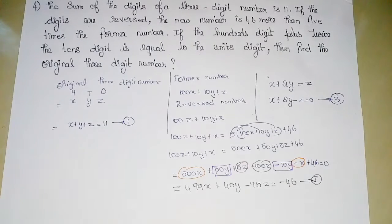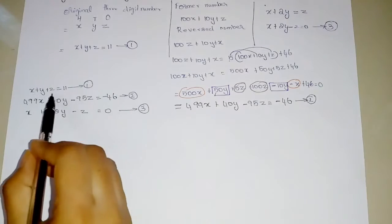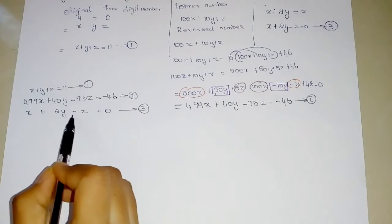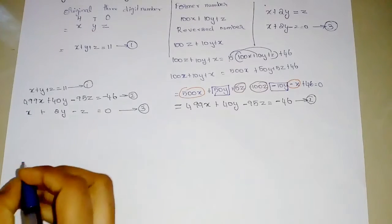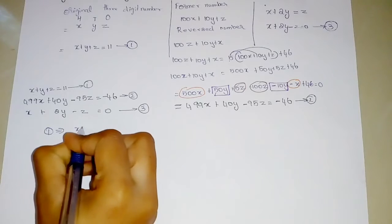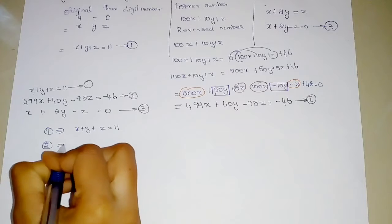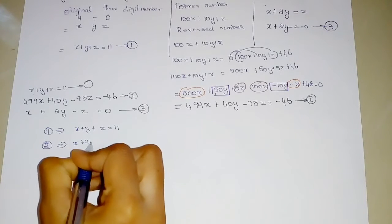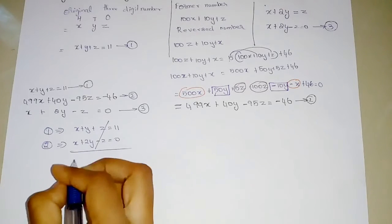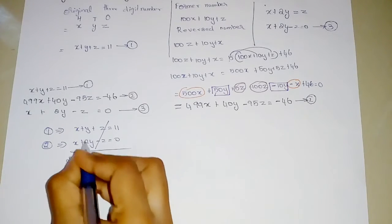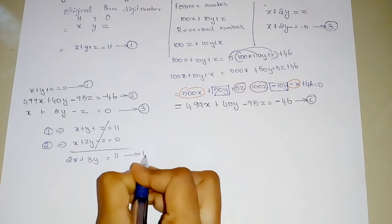Now we will solve the equations. Adding Equation 1 (X plus Y plus Z equals 11) and Equation 3 (X plus 2Y minus Z equals 0), the Z terms cancel out, giving 2X plus 3Y equals 11. This is Equation number 4.